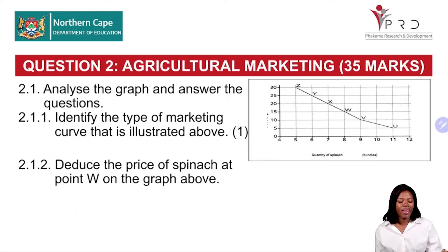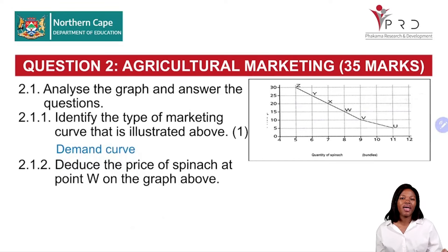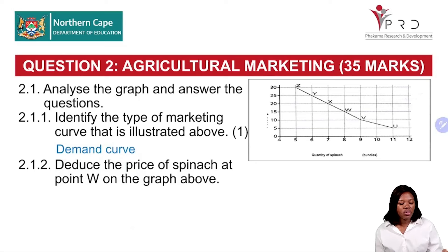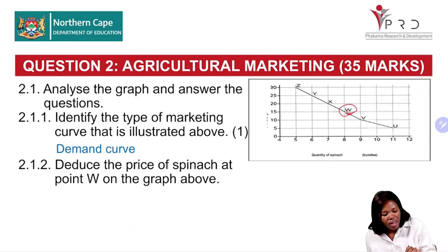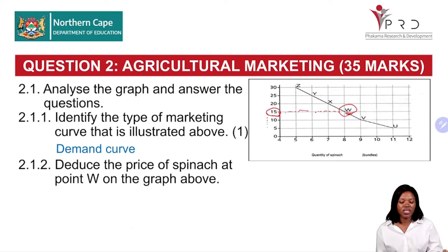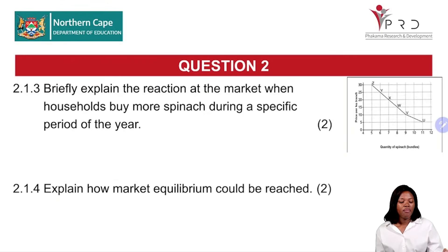Question 2.1.1: Identify the type of marketing curve illustrated above. The correct answer is the demand curve. Why? Because the relationship between quantity of spinach and price is inversely proportional — the graph is going down. Question 2.1.2: Deduce the price of spinach at point W on the graph. At point W, you move horizontally and find that the price of spinach is R15.